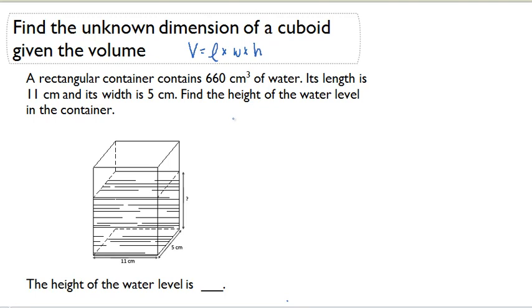A rectangular container contains 660 cubic centimeters of water. Its length is 11 centimeters and its width is 5 centimeters. Find the height of the water level in the container. So let's take a look.